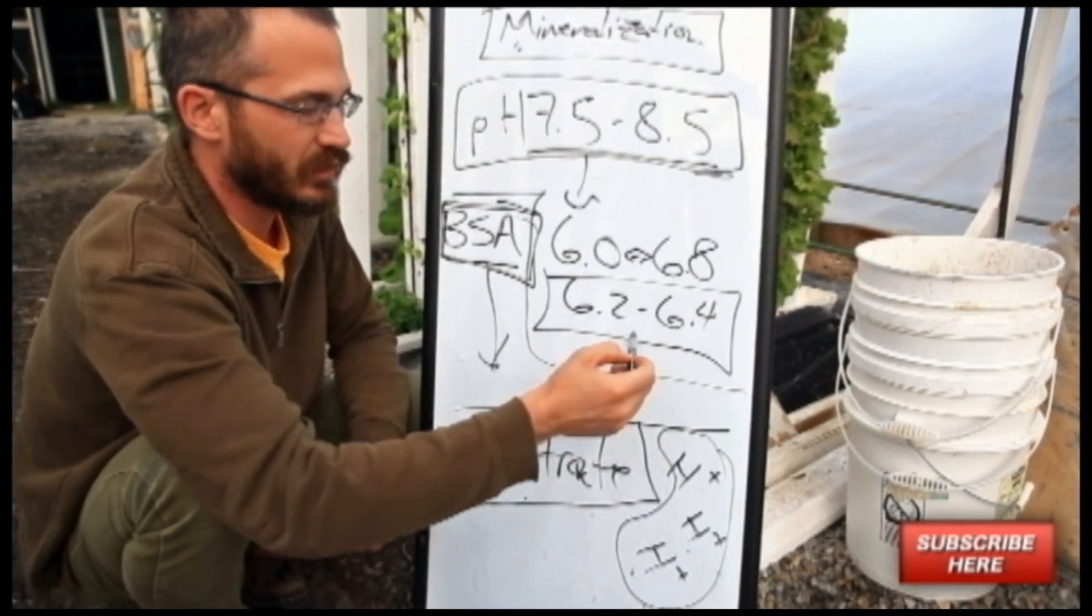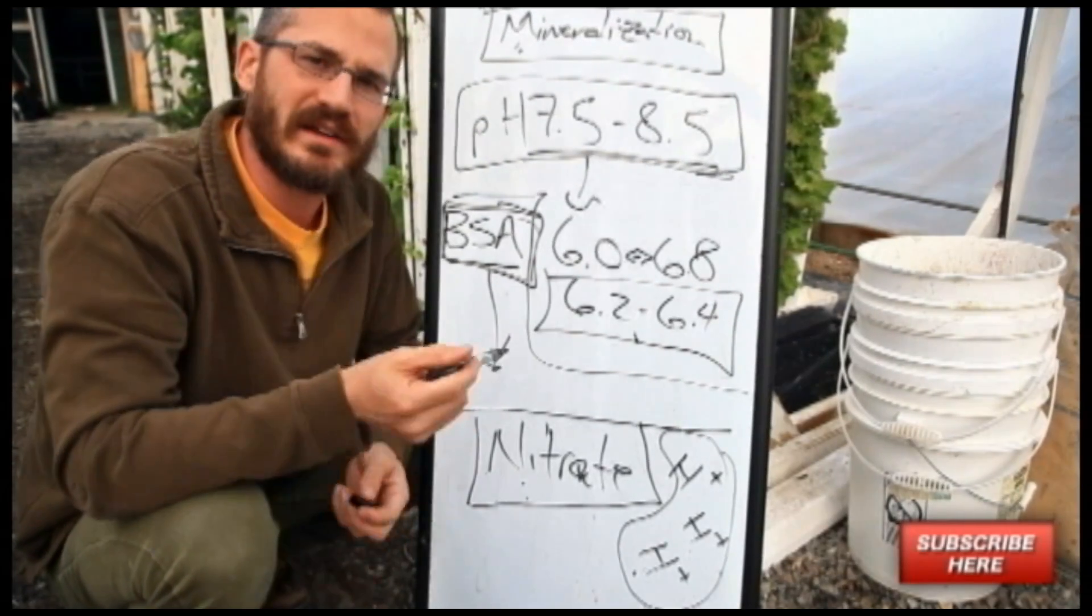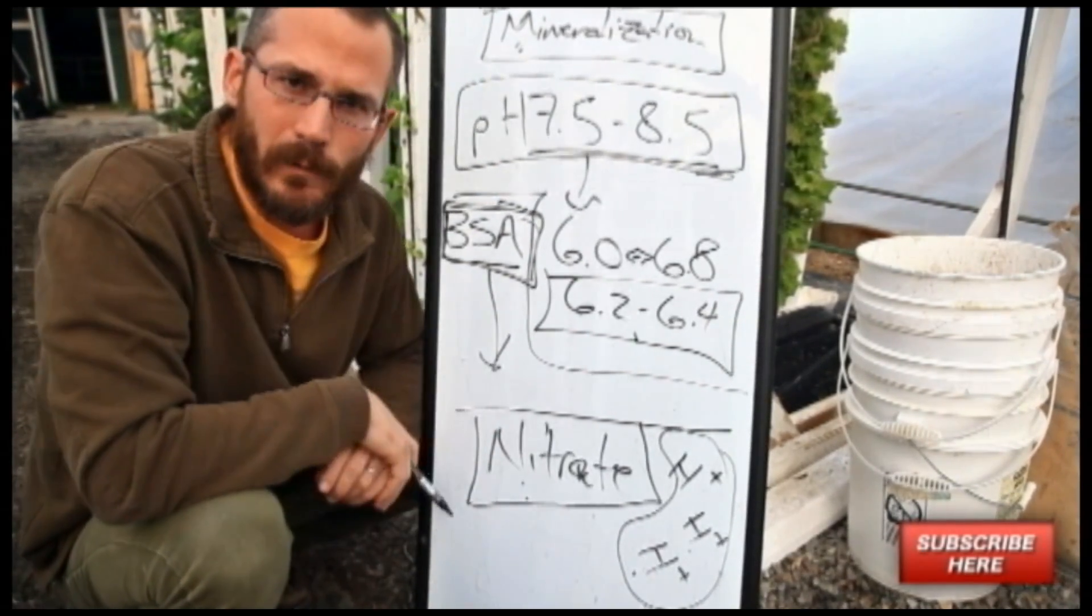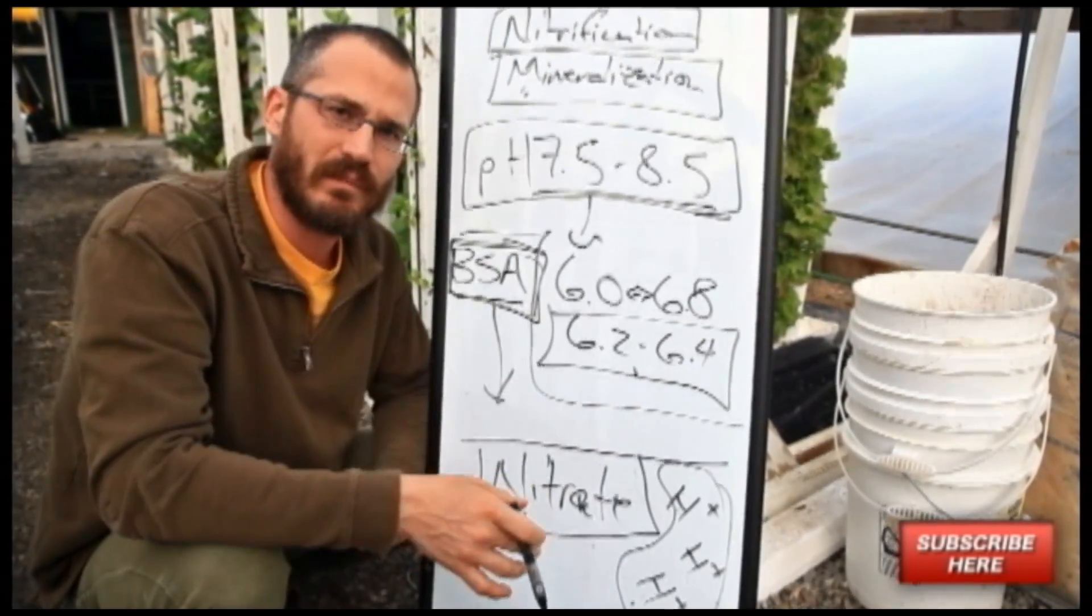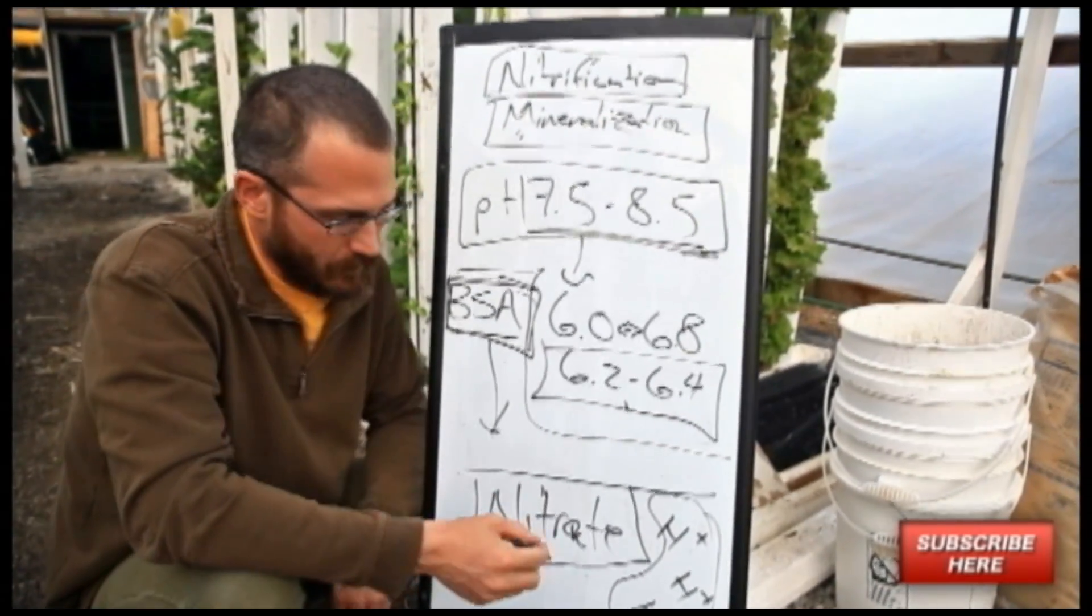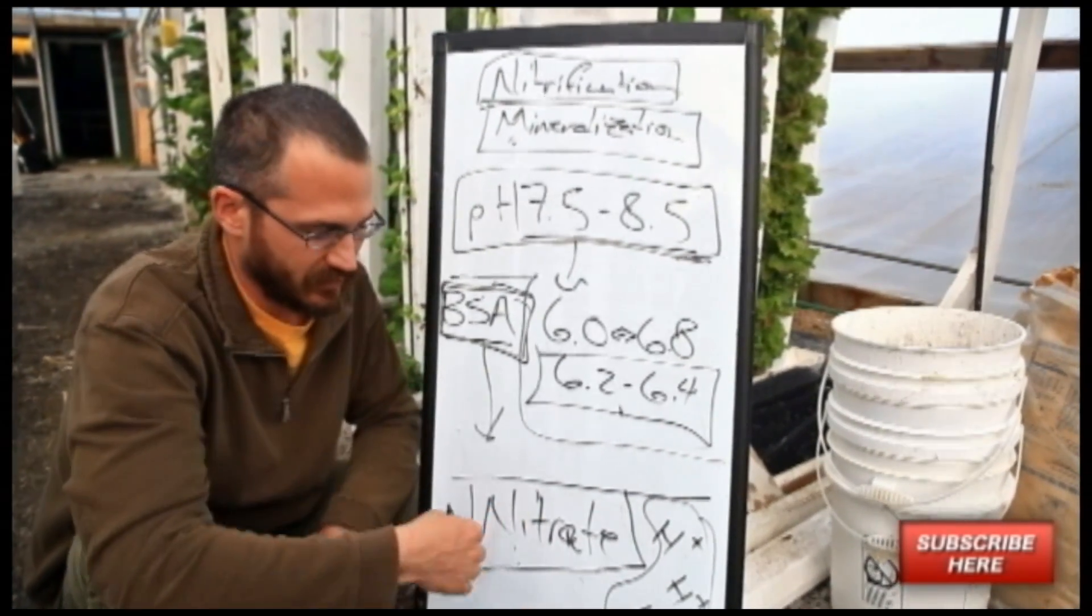We're dropping this pH down closer and closer. In the end what it does is it gives us much more control over how we run our system pH wise and also how much nitrate we're producing in our system.